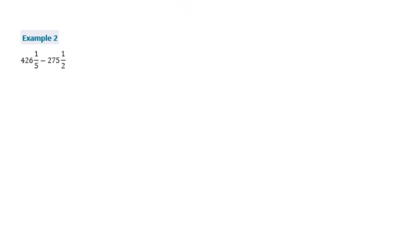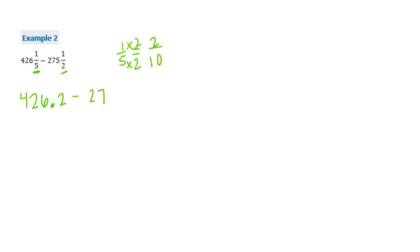Example 2: 426 and 1 fifth minus 275 and 1 half. Here they didn't give it to us in tenths or hundredths, so we're going to need to figure out 1 fifth and 1 half. So 1 fifth — I'm going to make it out of tenths: 5 times 2 is 10, 1 times 2 is 2 — so this is 426 and 2 tenths. Then minus 275 and a half. We should know that one half is 0.5, so 275 and 5 tenths.